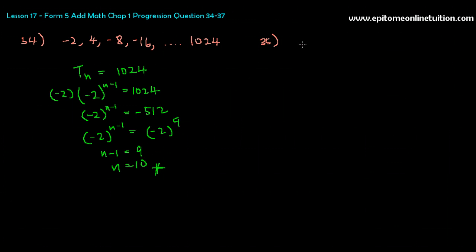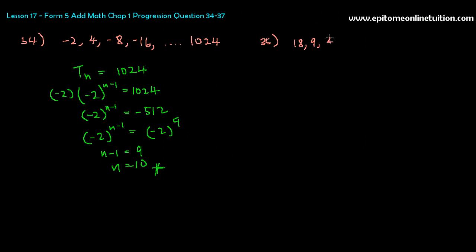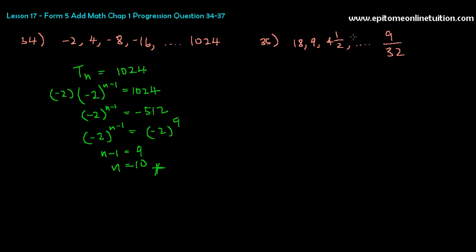If you notice, 34 and 35 are actually asking the same thing — you just have to know how they ask the question. The GP is 18, 9, 4.5, and so forth until 9 over 32. So 9 over 32 is which term? Basically, it's the same as this — how many terms are there until 9 over 32? That will be the term 9 over 32. So 1024 is the 10th term, meaning there are 10 terms inside.